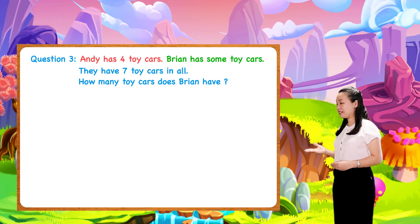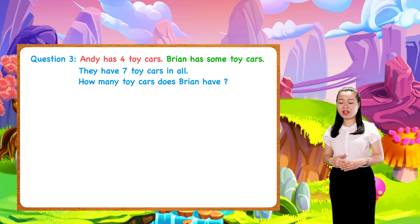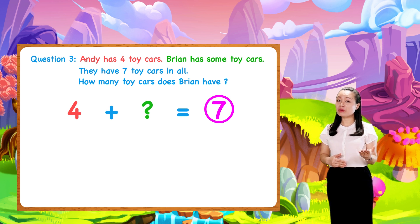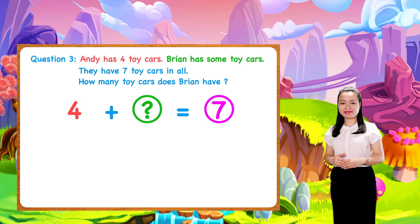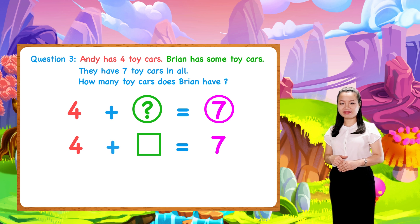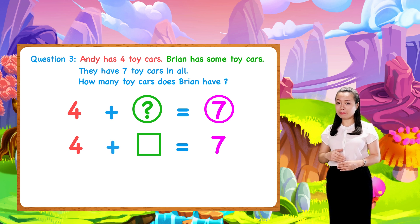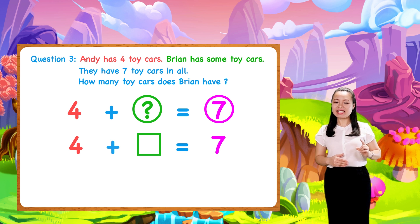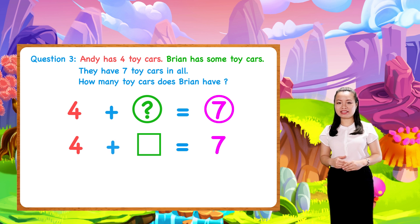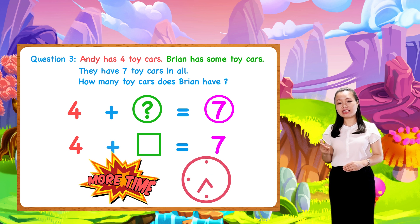Question three is one type of word problem where the sum is known and we have to find a missing number. For the missing number, you can use a question mark or a box. To find the missing number, ideally recall the addition facts — otherwise, you may take more time to find the answer.